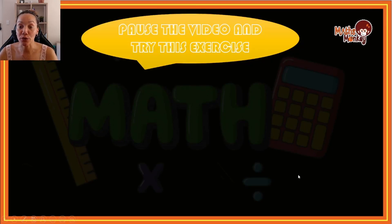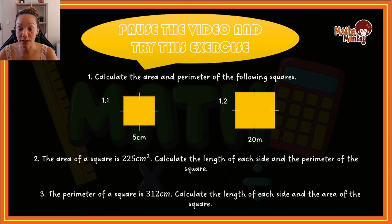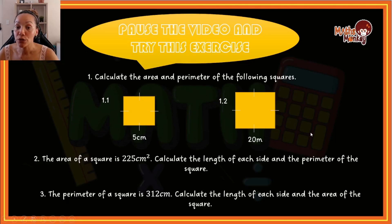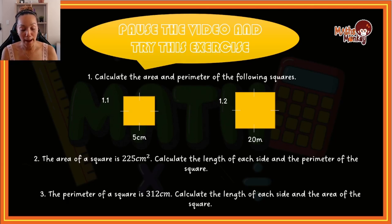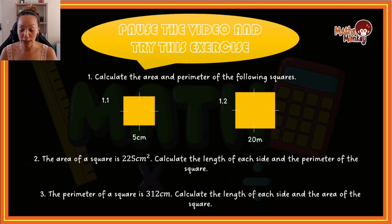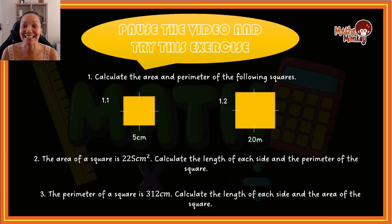I'm going to ask you to pause this video and try to calculate the answers to the questions I've given. Then come back and I will give you the answers. Remember: if they ask area, use the area formula; if they ask perimeter, use the perimeter formula. Make sure your units stay the same as the question for perimeter, and that units are squared for area. Pause the video, try the exercise, then come back and see how well you did.